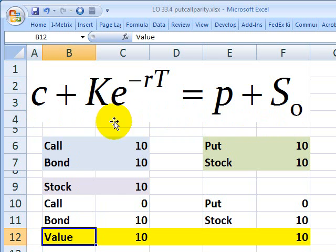This is the formula for Put-Call Parity. It connects the price or value of a European-style call option and the price or value of a European-style put option.